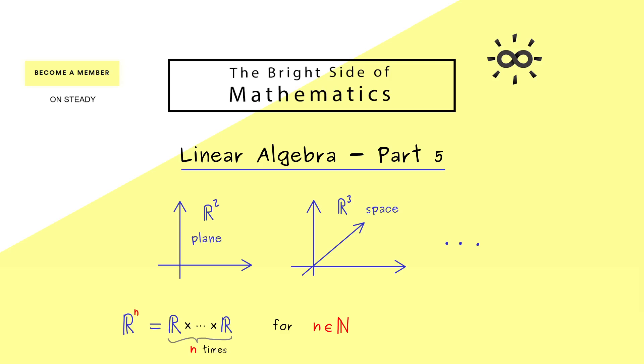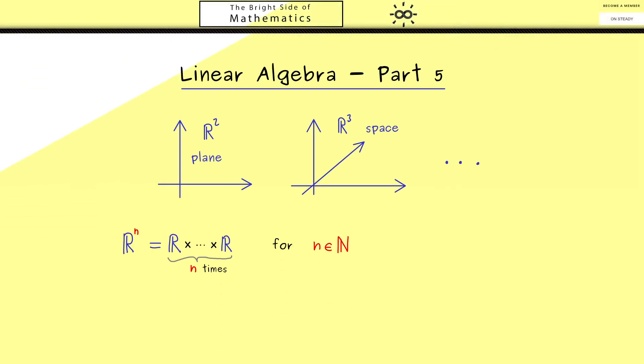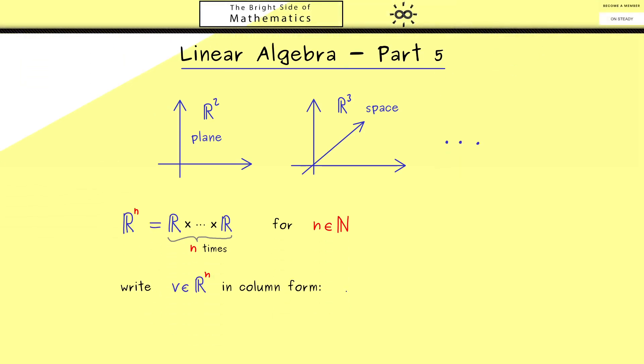However, as before in linear algebra we want to write them in a column form. This means that such a vector v here is written vertically. And then the components here are just called v1, v2 and so on until we reach vn. And as always these entries here are just real numbers.